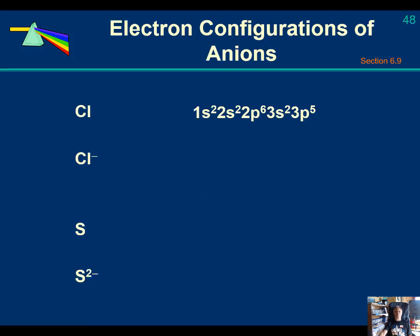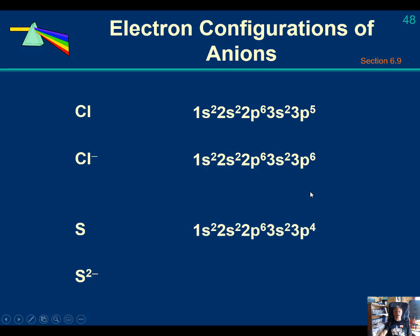Electron configurations for anions. As we said, they tend to gain electrons. Chlorine radical, that is chlorine with an unpaired electron in its valence shell, it's going to try and gain 1 electron to have that 3p6 electron configuration. It now has argon's electron configuration. It's a noble gas. It's inert. That means it's unreactive.